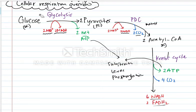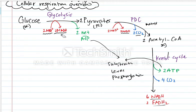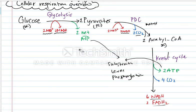Now, these electron carriers — I likened them earlier to checks. They are not really useful right at the beginning, like ATP. They have to go into the electron transfer chain to be cashed, or to use their energy to make ATP. Think of ATP as our cash, and these electron carriers, the NADH and FADH2s, as our checks. They have to go to the bank, which is the electron transfer chain, to be cashed out.